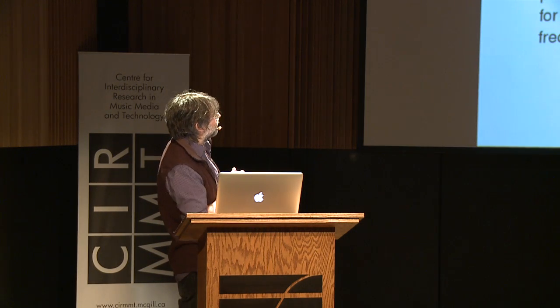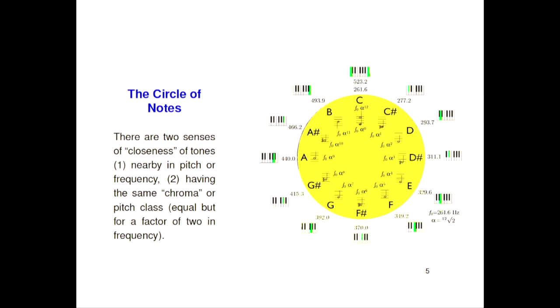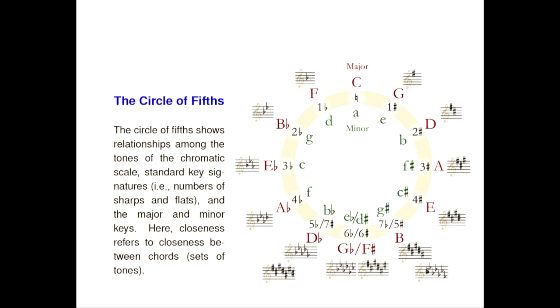If we think about drawing out the notes — here's twelve notes around a scale — you see I've drawn them in a circle. A circle is a topological structure. Once you say the word circle, the very next thing that pops into most musicians' minds is the circle of fifths. Here is an illustration from Wikipedia. This implies yet another kind of closeness — closeness of key, or closeness between chords — and it's also a circle.